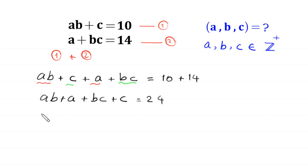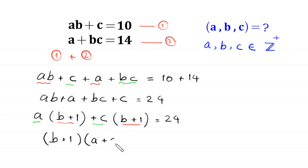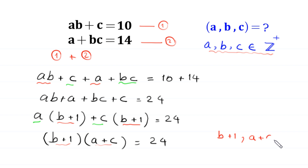From the first two terms we can factor out a, leaving (b + 1); from the next two terms we can factor out c, leaving (b + 1). So (b + 1) is common, and we factor it out to get (b + 1)(a + c) = 24. Because a, b, c are positive integers, b + 1 and a + c are also positive integers.